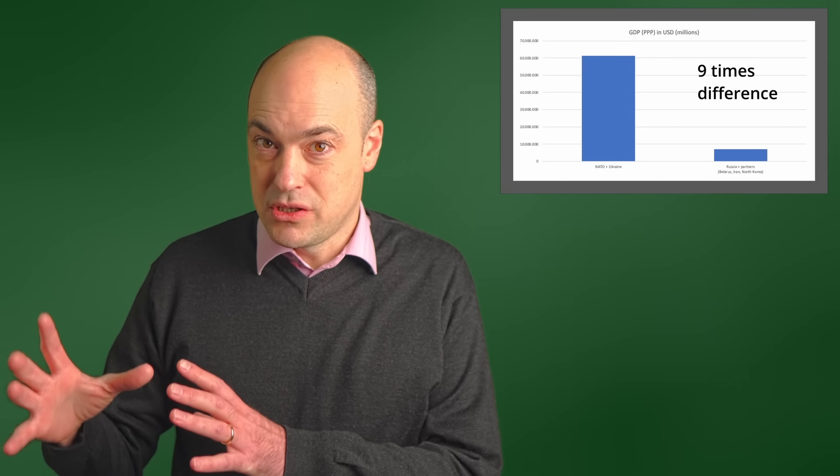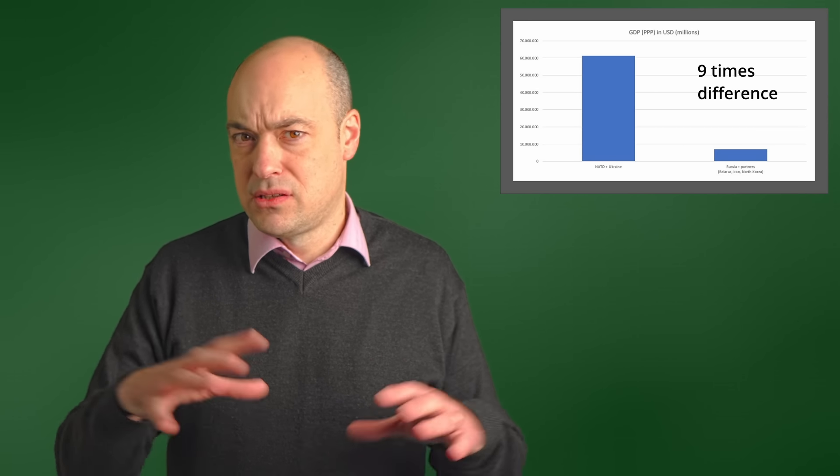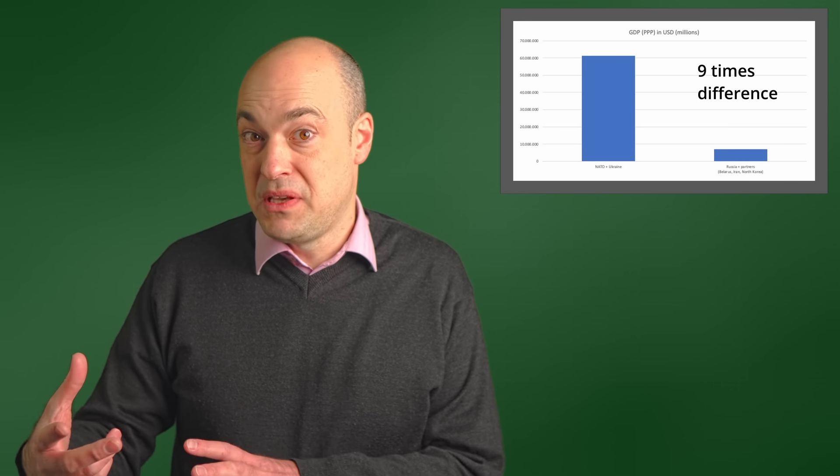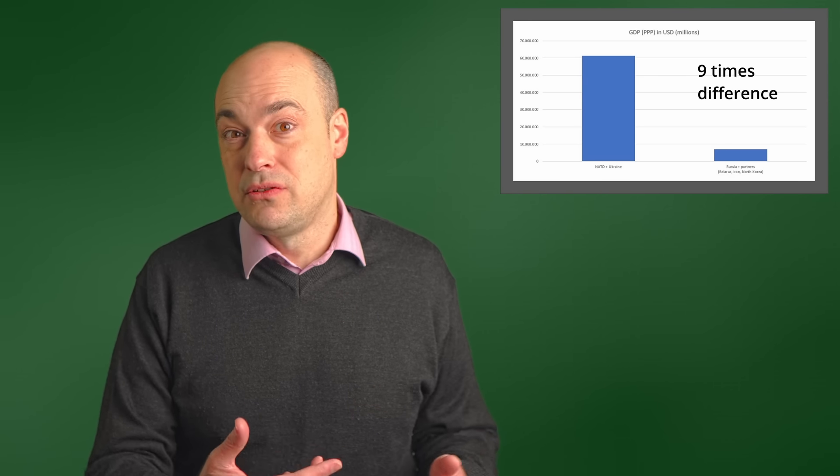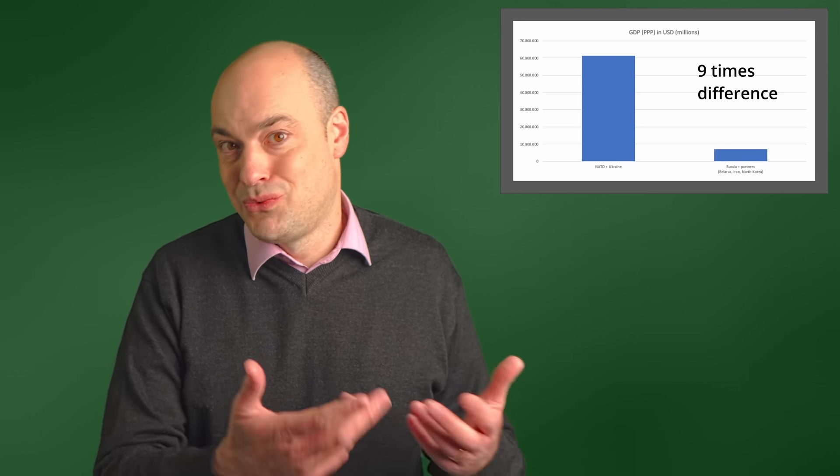Which of these numbers is the right one? Is it 1 to 22 or is it 1 to 9? I think the right answer is that it's somewhere in between because there are some areas where it's better to use PPP and others where it makes more sense to use the nominal dollar value.